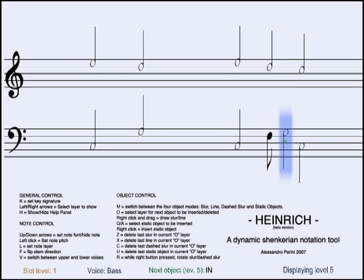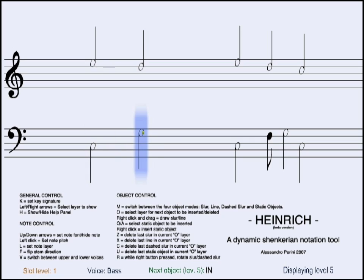By pressing the F key you can flip stems. To switch between the two voices just press V. For objects other than notes, set the type of object with the M key. Four types are available: slurs, dashed slurs, lines, and static objects.